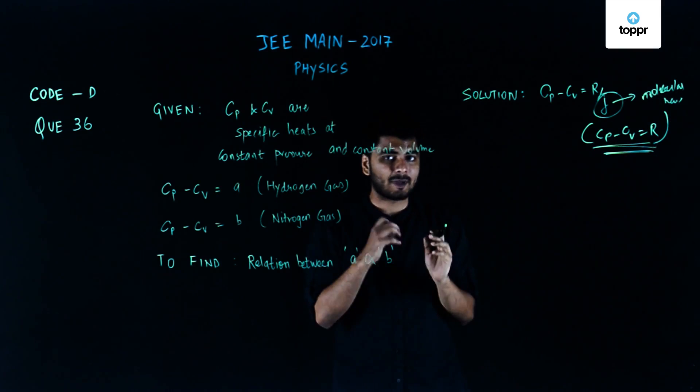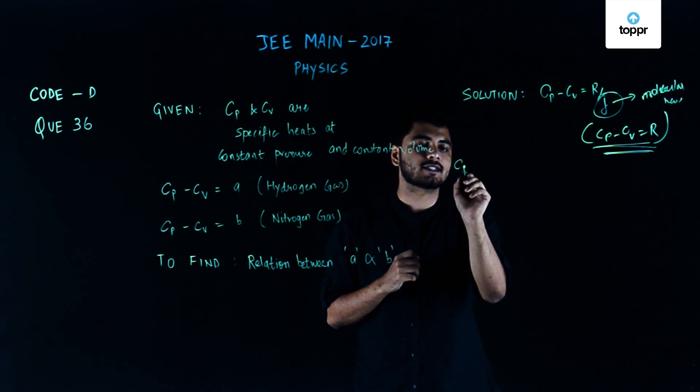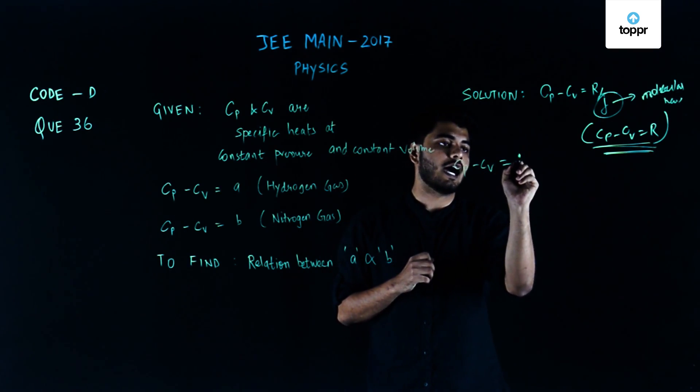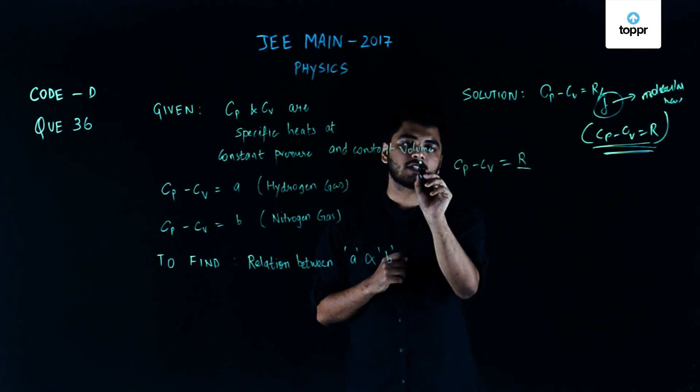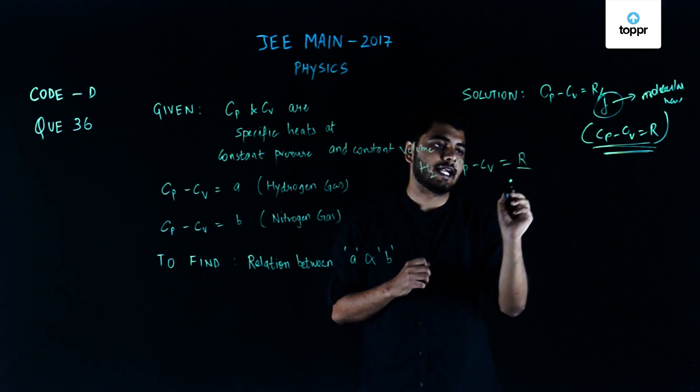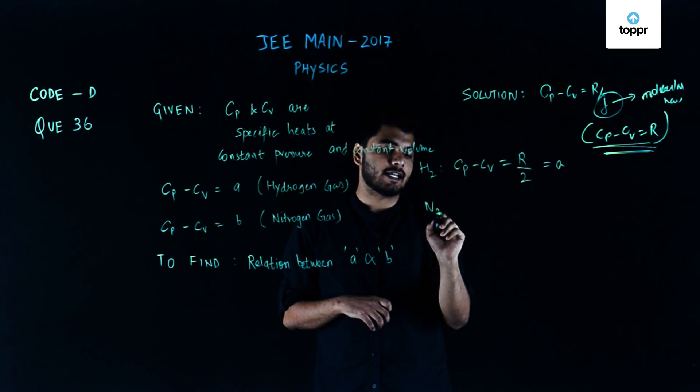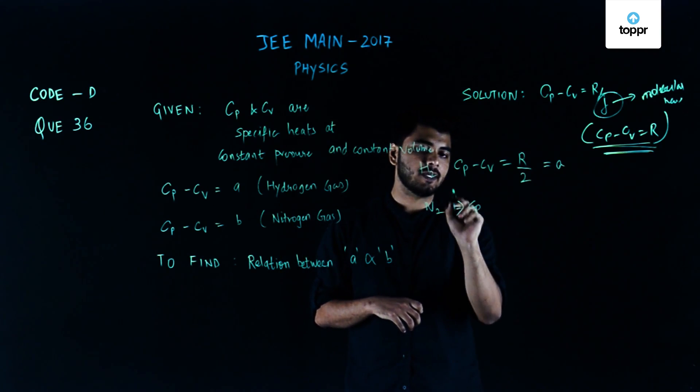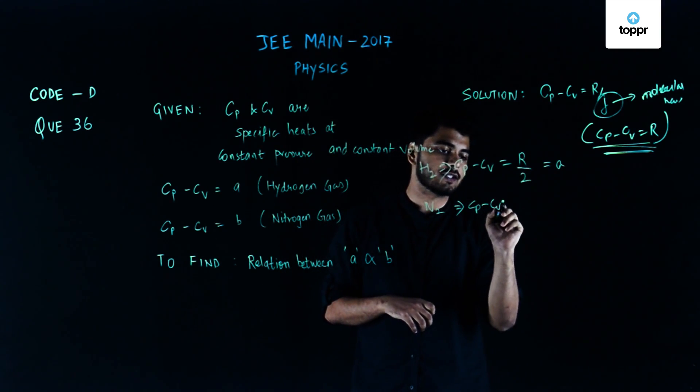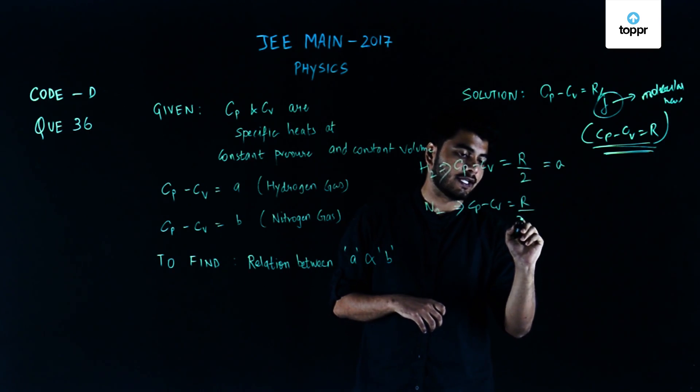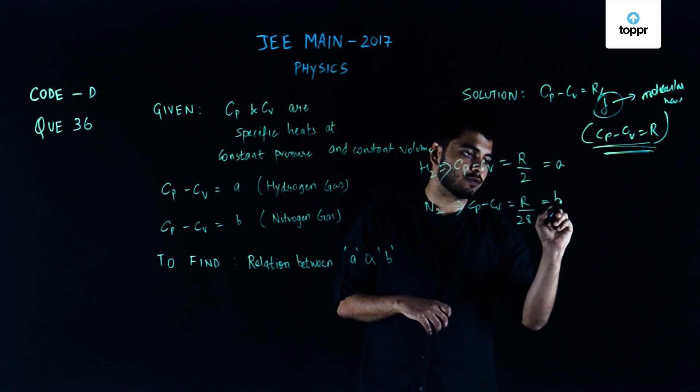Now this question becomes fairly simple. Cp minus Cv equals R by J. In case of hydrogen, solving for hydrogen it will be R by 2, which equals A. For nitrogen N2, Cp minus Cv equals R by 28, which equals B.